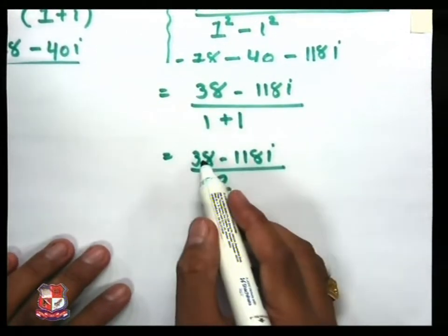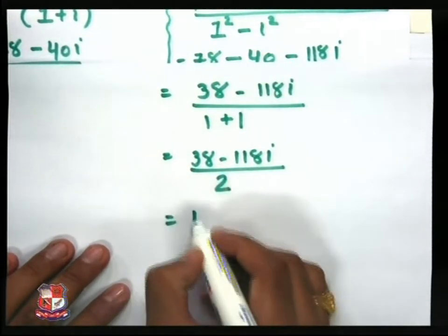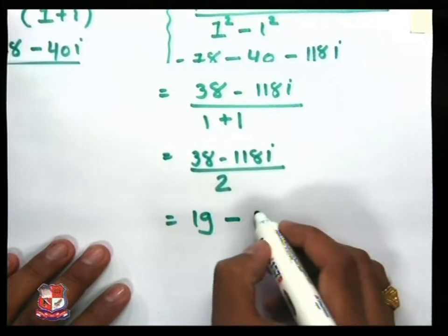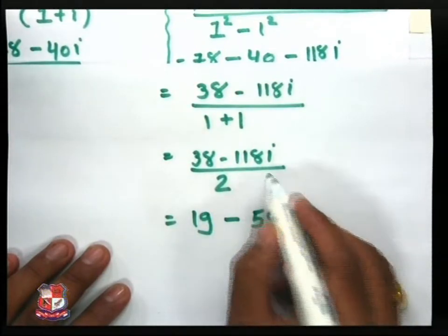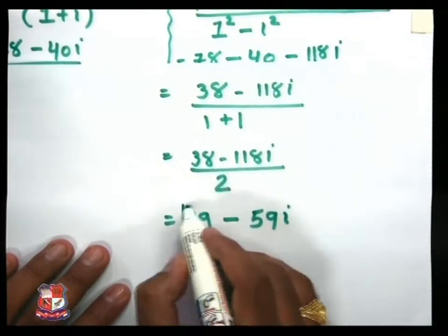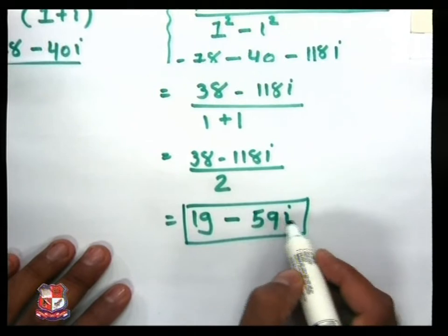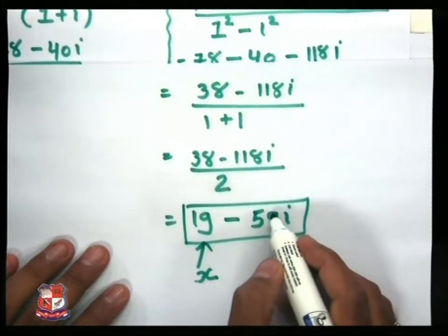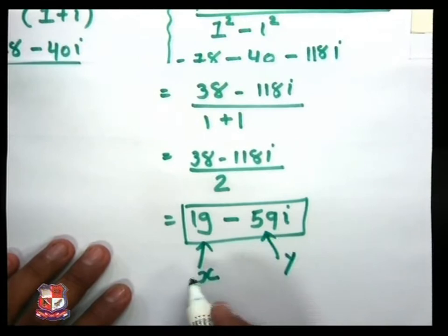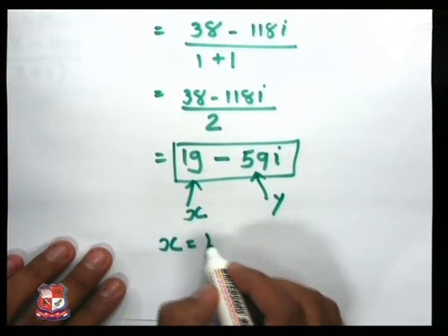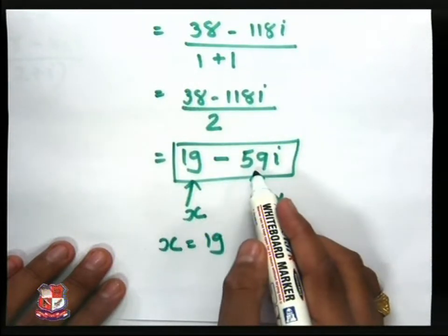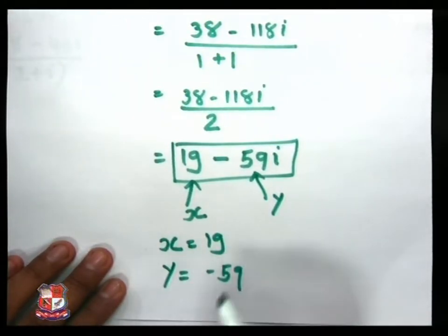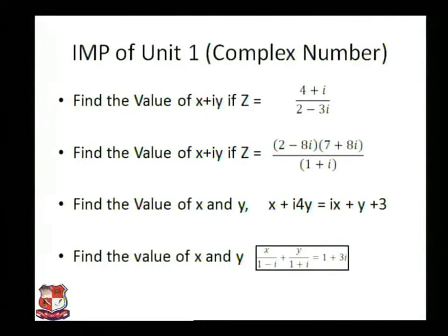Now 38 minus 118i divided by 2. We apply 2 to both sides: 38 divided by 2 gives 19, and 118i divided by 2 gives 59i. So our result is 19 minus 59i. So 19 becomes our x and i multiplied by 59 means our y is minus 59. In this way, x is equal to 19 and y is equal to minus 59.